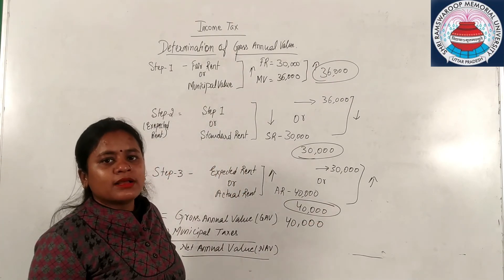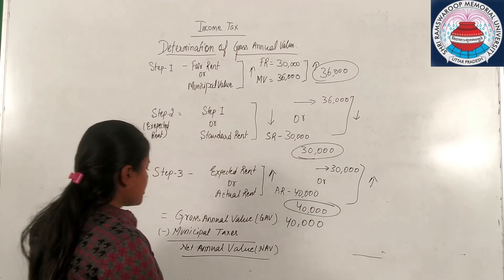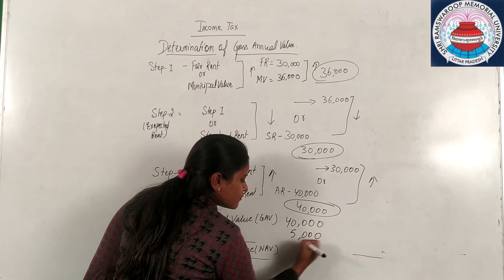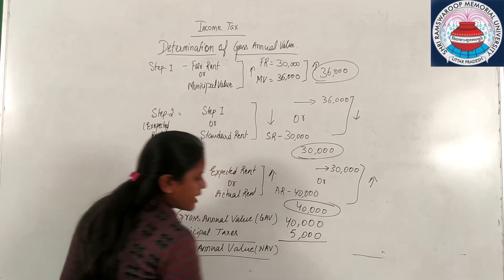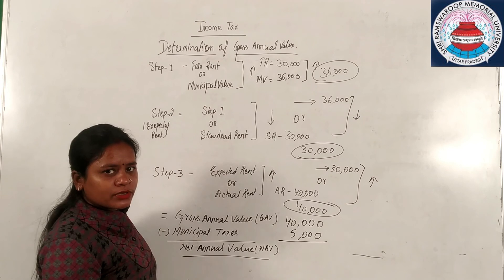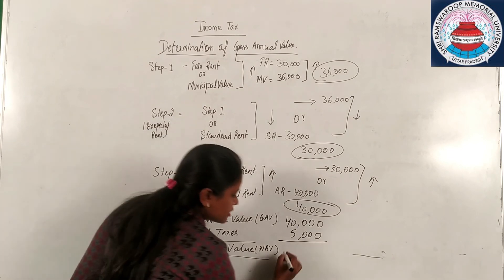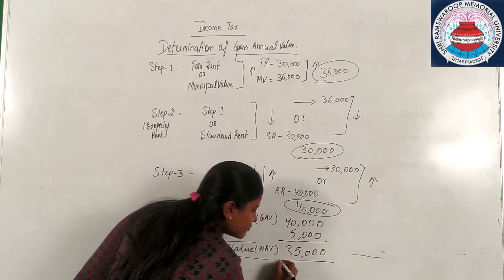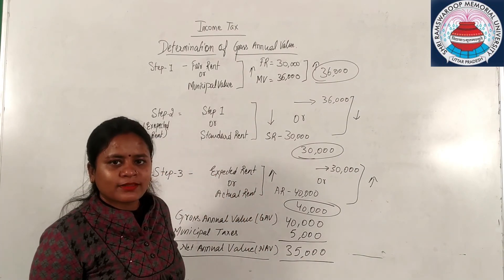Say municipal taxes is 5,000. These all are imaginary figures. So you can compute in this way only. So answer NAV that is net annual value will be 35,000. Thank you.